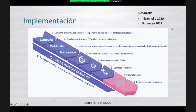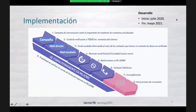With regard to implementation, in order to implement this, it was launched in July 2020 and fully implemented in May 2021. What does this consist of? First of all, we start with a campaign of communication on the importance of maintaining the contacts updated. Then what was done was they sent a direct mail to all the contacts in the system for them to validate their email and validate their account.